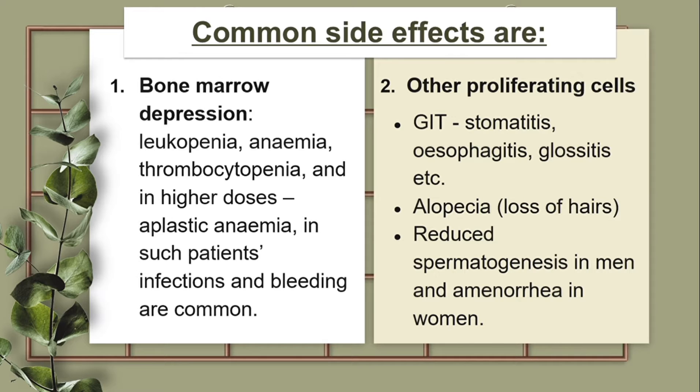Reduced spermatogenesis in men and amenorrhea in women can occur due to damage to the germinal epithelium.